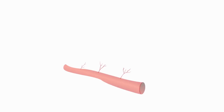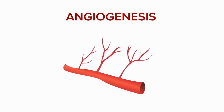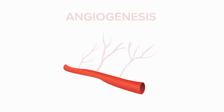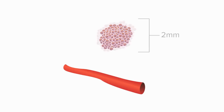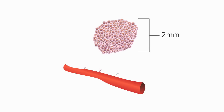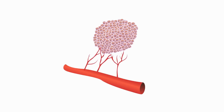Solid cancers have been shown to depend upon angiogenesis, the growth of new blood vessels from preexisting blood vessels. A tumor that is in its early stages of development cannot grow past a few millimeters in diameter unless blood vessels supply it with oxygen and nutrients. In this way, blood vessels serve as lifelines to cancer cells.